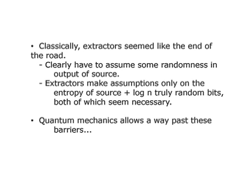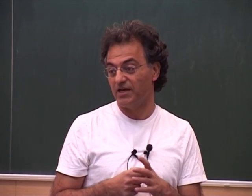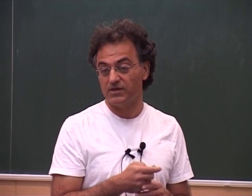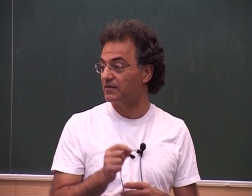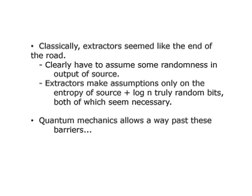It turns out you can get past these seeming barriers using quantum mechanics. One would imagine that randomness and quantum mechanics are connected in a very fundamental way, so if you want to generate randomness, you should use quantum mechanics. But that's not the issue here — the issue is not how do you generate randomness, but how do you certify that what you've generated is truly random, without assuming what went into the box. And it's more than a bit of a surprise that you can get past these barriers in a quantum world.